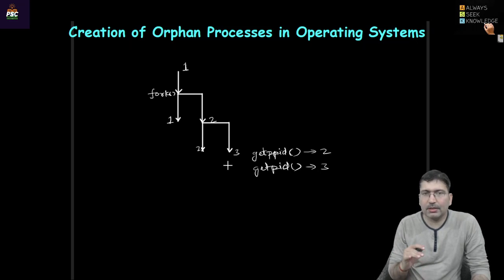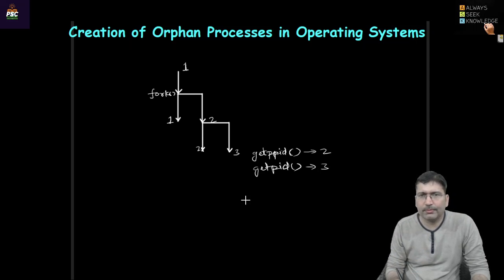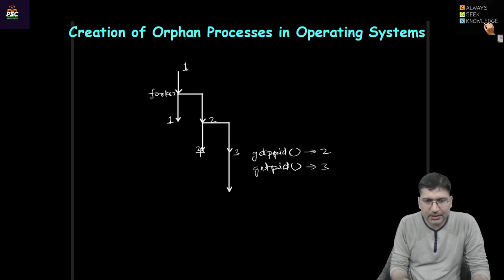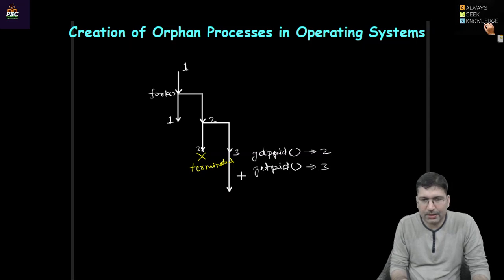Now, what is an orphan process? A process which is executing but the parent of that process has been terminated — such processes we consider as orphan processes. Like in real life, a child is there but the parent has died, so the child becomes an orphan. In case process three is executing continuously but process two has been terminated, then process three becomes an orphan in the system.